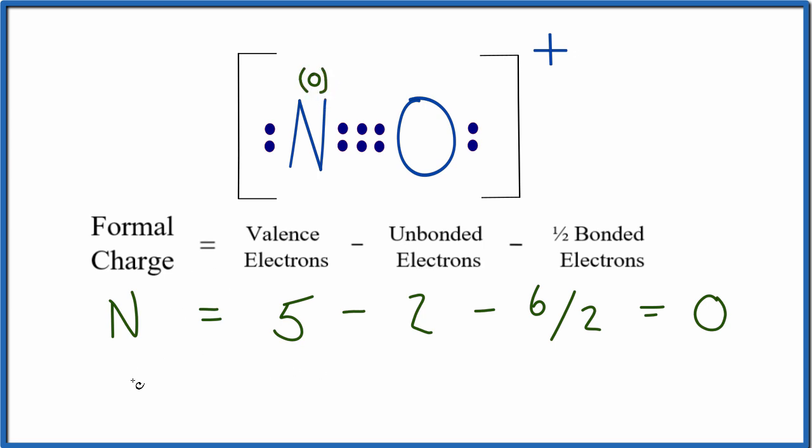For the oxygen, we have six total valence electrons, then we have unbonded, two, and then we're going to subtract the bonded valence electrons. We have two, four, six of those,